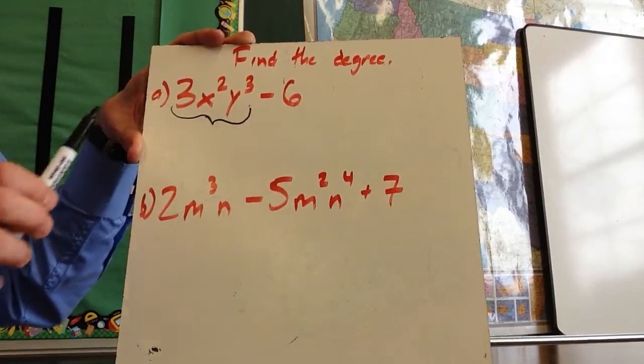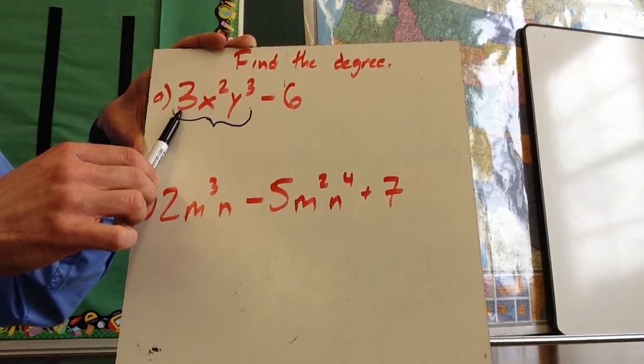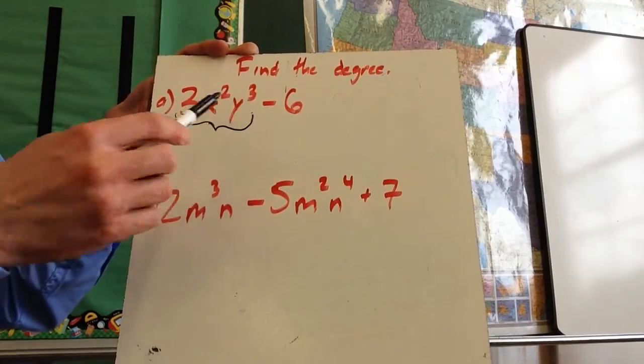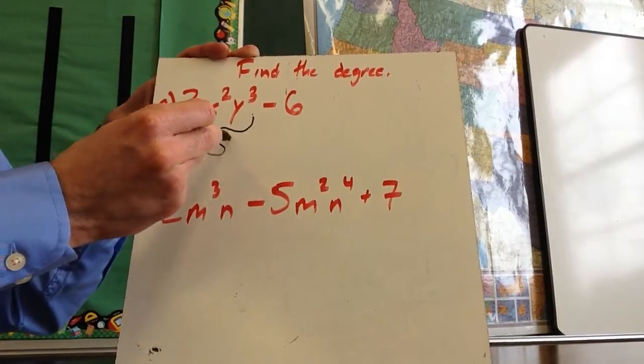I'm only looking at the variables now. Keep in mind, I'm not talking about the constant, right? So that's the three. I'm looking at the x squared and the y to the third, and these have a total power of five.